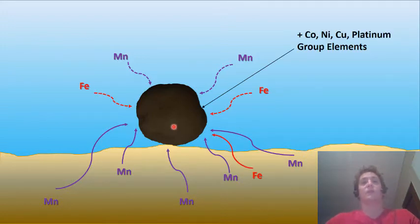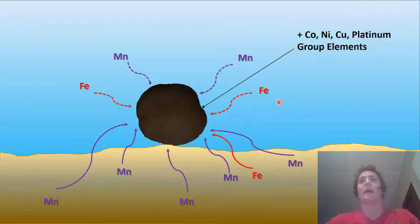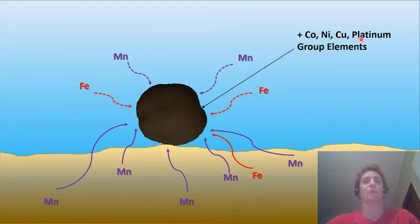It's not just manganese that is precipitating here but also iron, which comes predominantly from the water column itself, and also a range of elements of economic interest including cobalt, nickel, copper, as well as the platinum group elements.